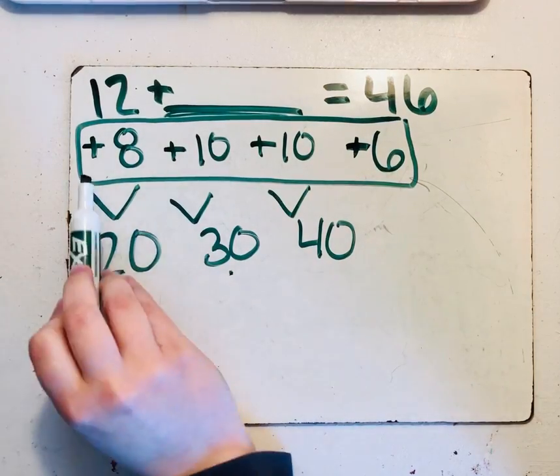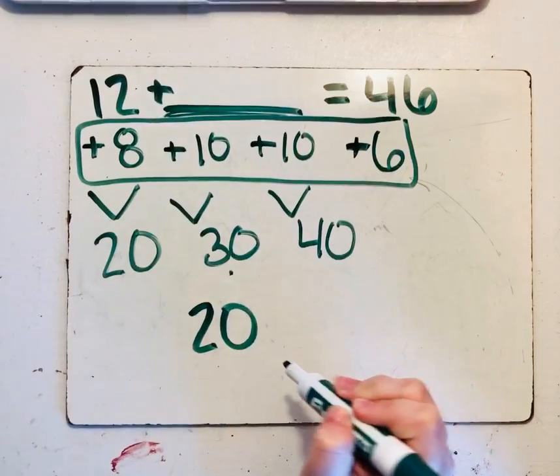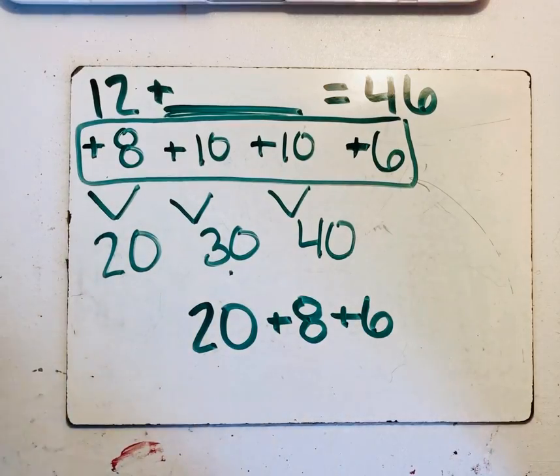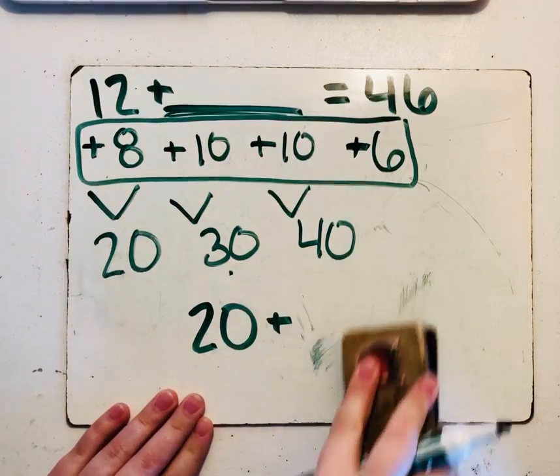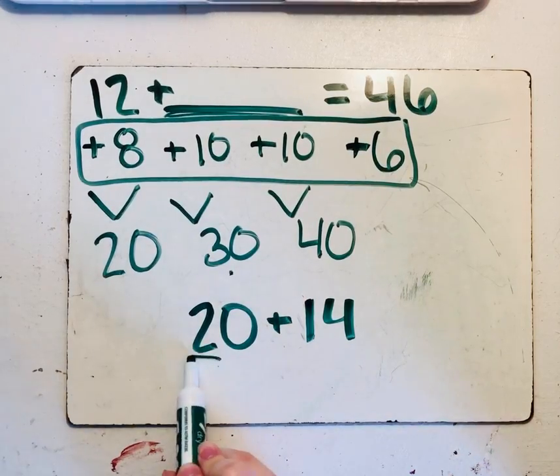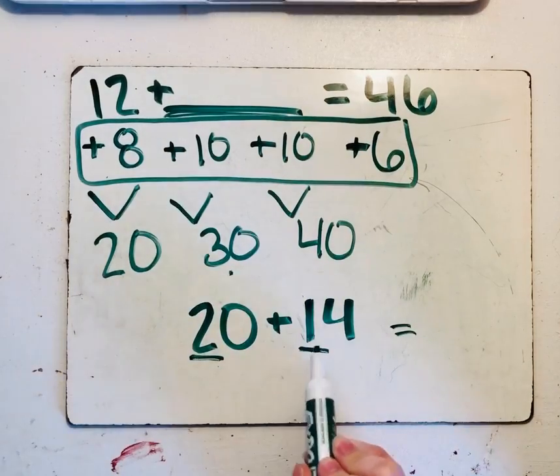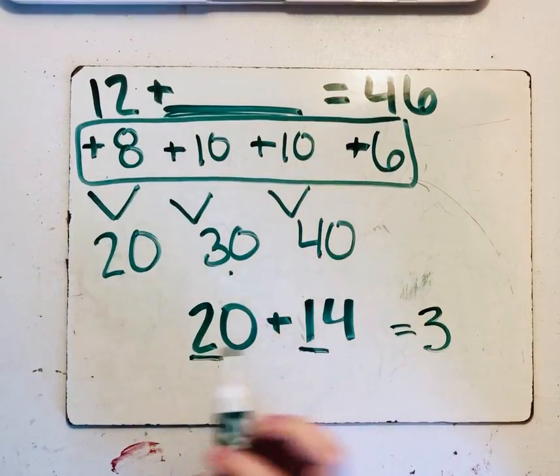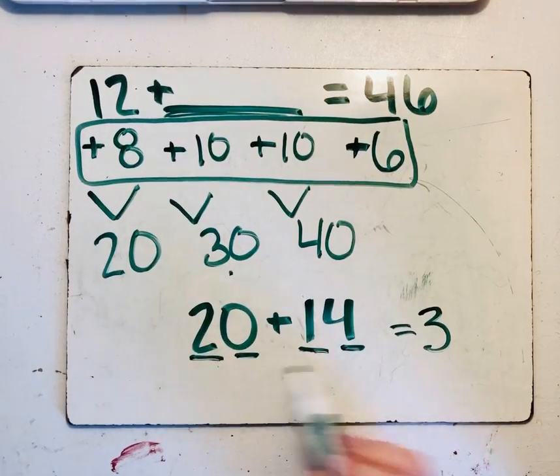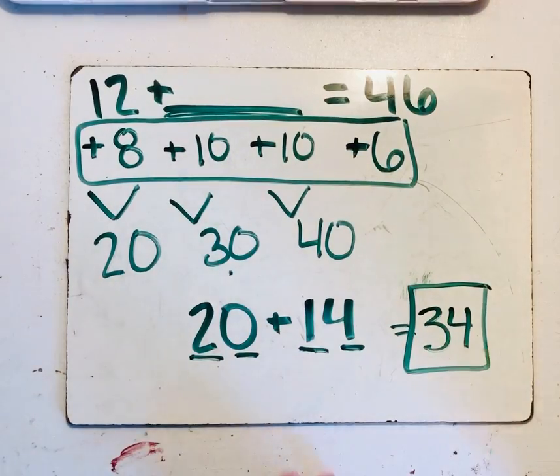So looking at these, we know that 10 plus 10 is an easy one to do. That's 20. And then we have plus 8 plus 6. We know that 8 plus 6 equals 14. Now let's look. If we look in the tens place and add those together, we are going to get 20 plus 10 is 30 in the tens place. Then we look in the ones place. 0 plus 4 is going to be 4 in the ones place. To get your answer of 34 ducks.